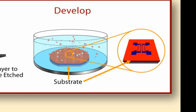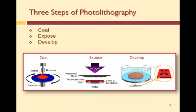After expose comes develop. In develop, select portions of the photoresist are dissolved with a chemical developer, leaving the mask pattern in the resist. We will now break down each of these steps into their secondary processes.